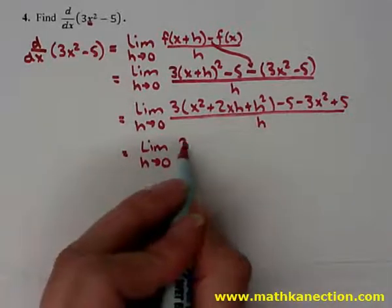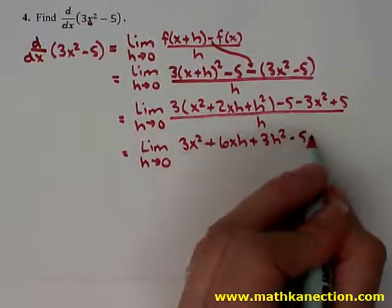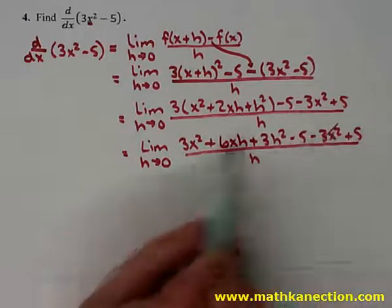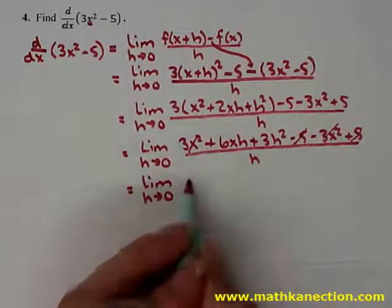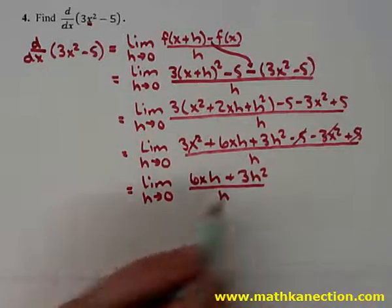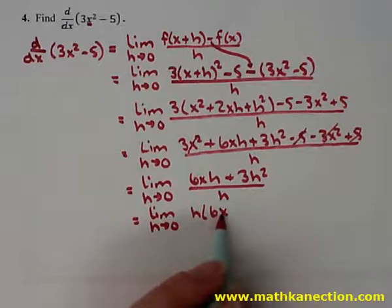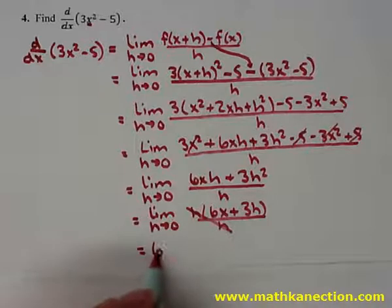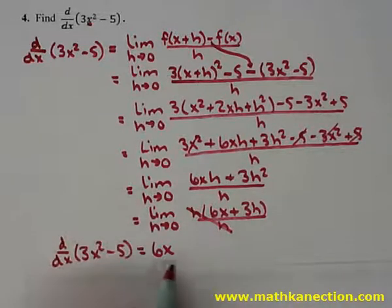Distributing the 3, we have 3x squared plus 6xh plus 3h squared minus 5 minus 3x squared plus 5, all over h. The 3x squareds cancel, the 5s cancel. We're left with the limit as h approaches 0 of 6xh plus 3h squared, all over h. Factoring out h from the numerator gives h times the quantity 6x plus 3h, all over h. The h's reduce, 0 goes in for h, and the derivative of 3x squared minus 5 is 6x.